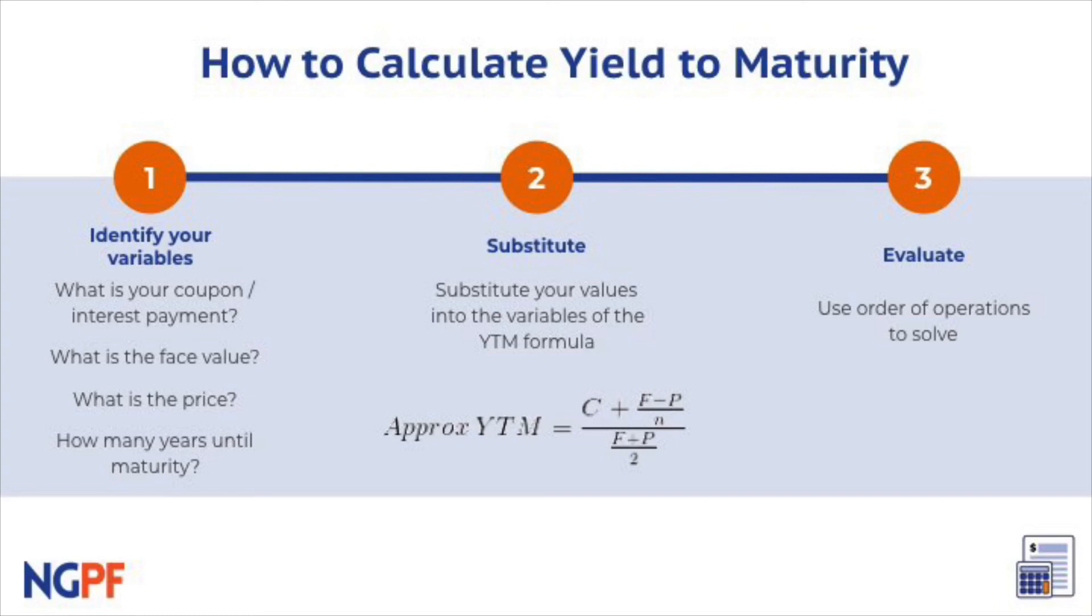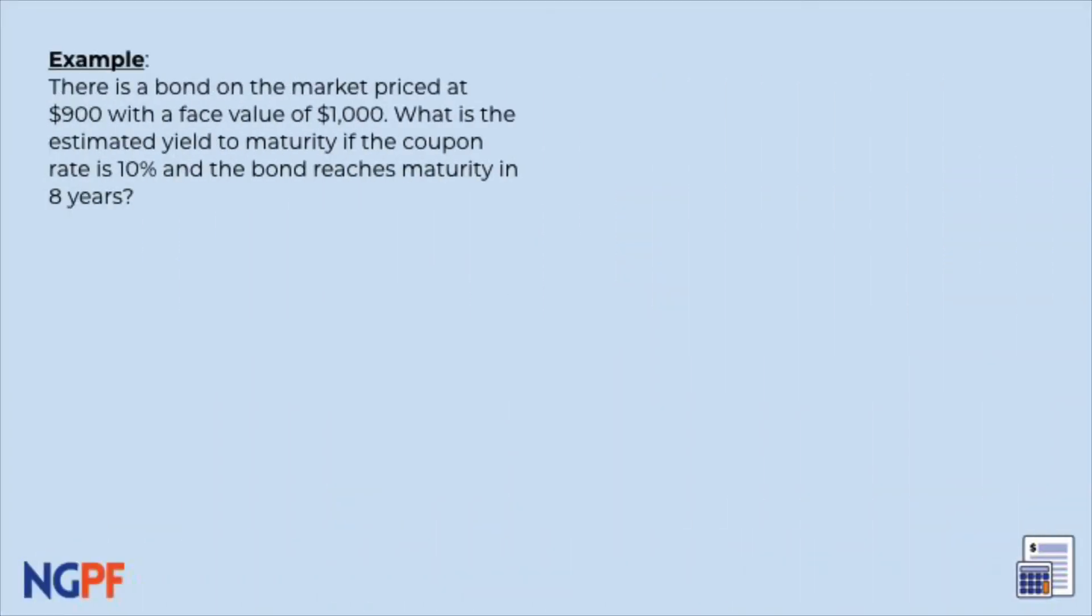Now it's your turn. There is a bond on the market priced at $900 with a face value of $1,000. What is the estimated yield to maturity if the coupon rate is 10% and the bond reaches maturity in eight years?